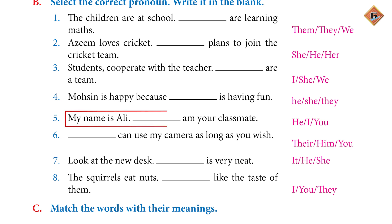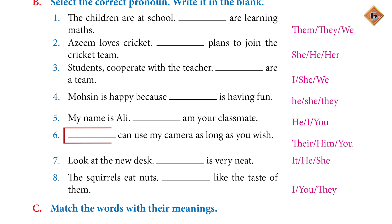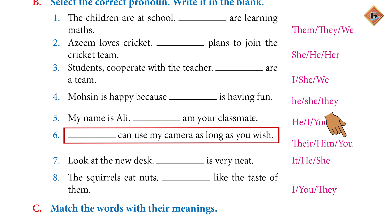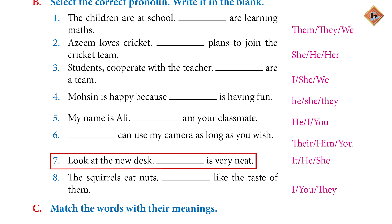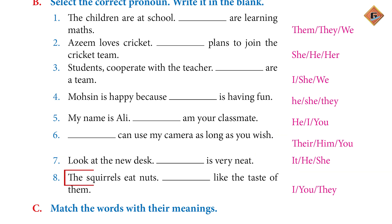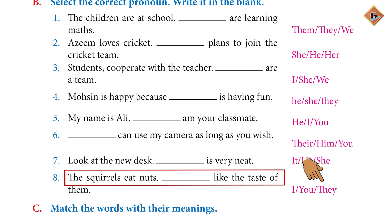Five: 'My name is Ali. ___ am your classmate.' Answer: I am your classmate. Six: '___ can use my camera as long as you wish.' Answer: You can use my camera. Seven: 'Look at the new desk. ___ is very neat.' Answer: It is very neat. Eight: 'The squirrels eat nuts. ___ like the taste of them.' Answer: They like the taste of them.